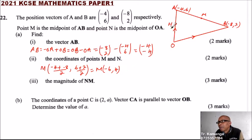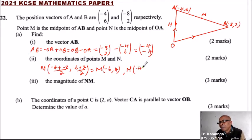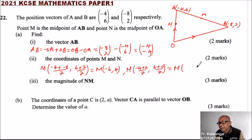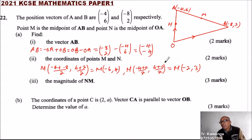For N, the midpoint of OA: the origin has coordinates (0, 0). So x = (-4 + 0) / 2 and y = (6 + 0) / 2. This gives N = (-4/2, 6/2) = (-2, 3). Those are the coordinates of N.